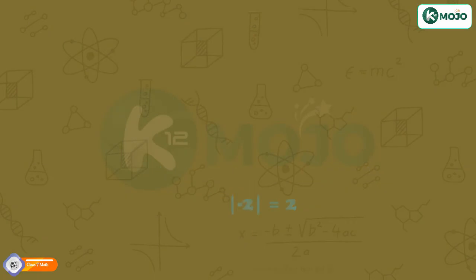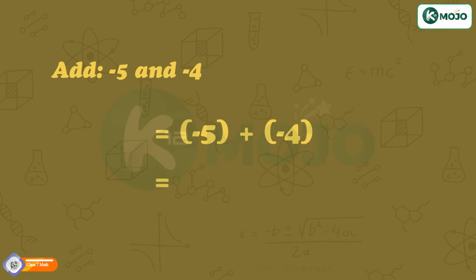Let us now add two integers. Add minus 5 and minus 4. Minus 5 plus minus 4 is equal to minus 5 minus 4, which equals minus 9.